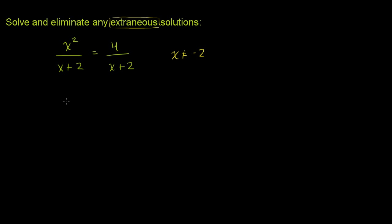So with that out of the way, let's try to solve it. So as a first step, we want to get the x plus 2 out of the denominator. So let's multiply both sides by x plus 2.